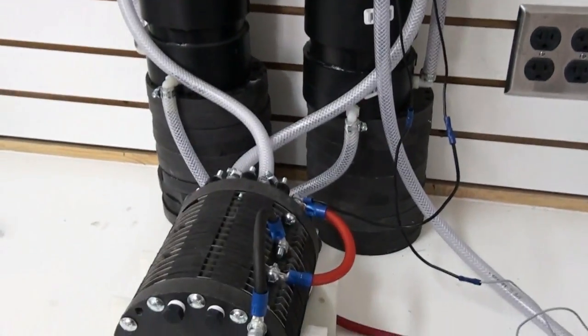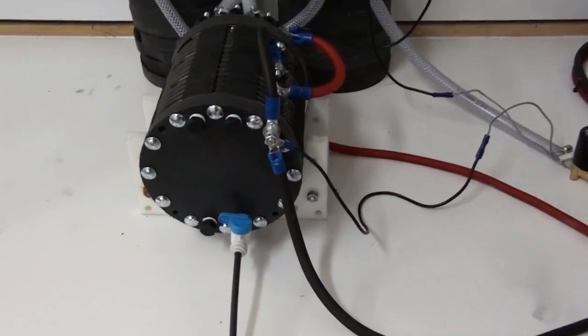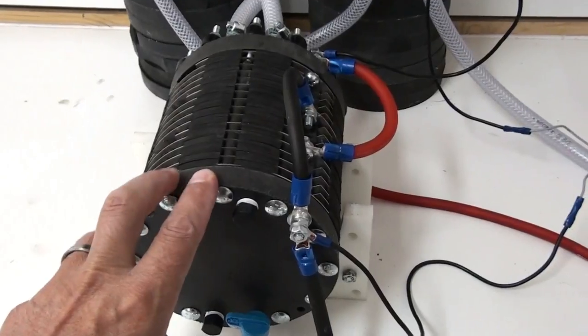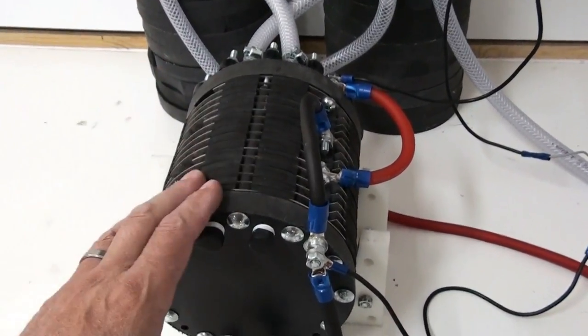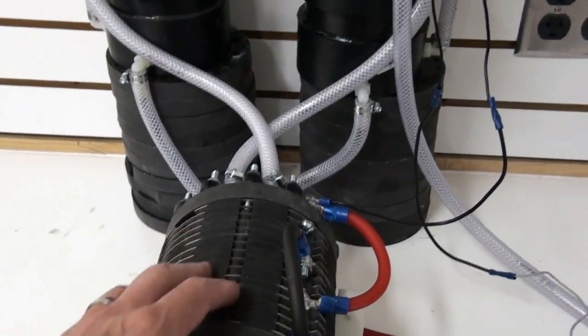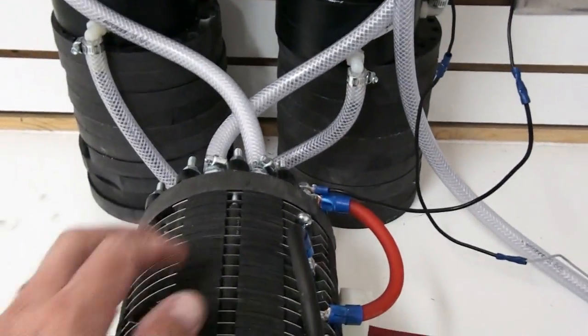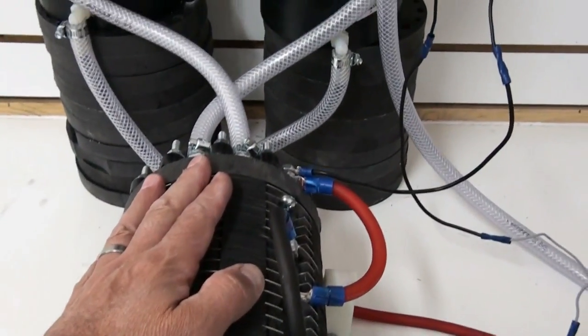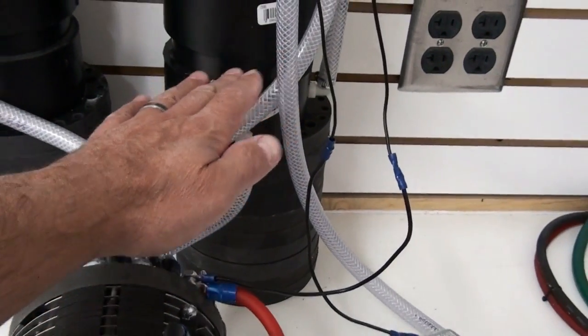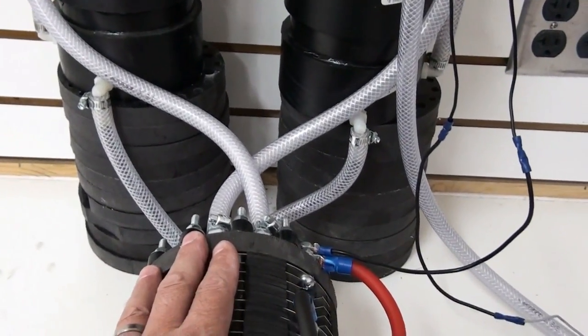A couple years ago I did videos on hydrogen compression. What we've got here is a hydro tube, a split cell generator. People call them different things. Basically it produces hydrogen and oxygen by splitting water into two parts hydrogen, one part oxygen. This generator sends the hydrogen out one tube and the oxygen out the other tube, and it splits them at over 99% purity.